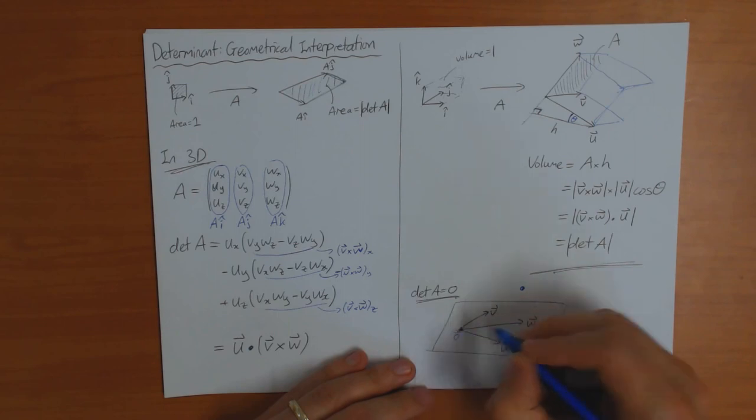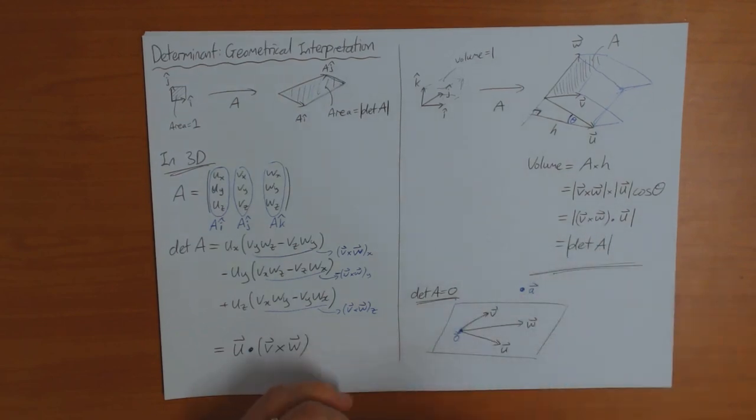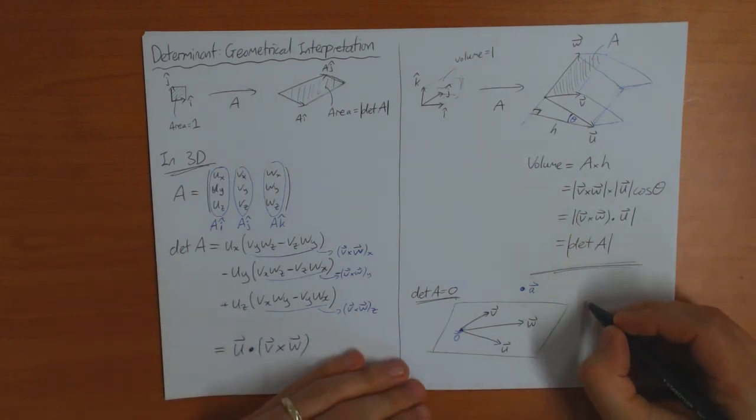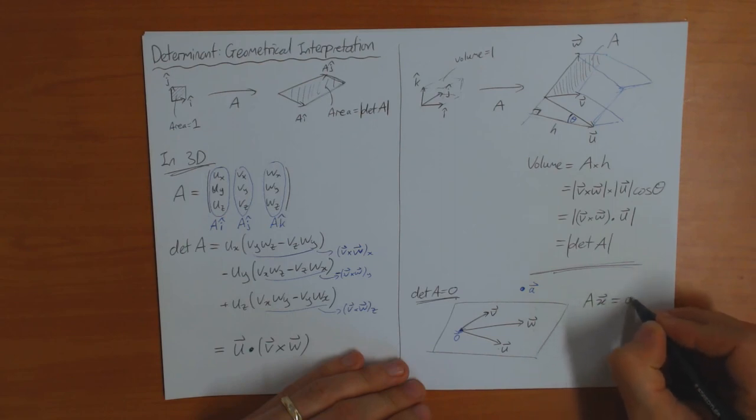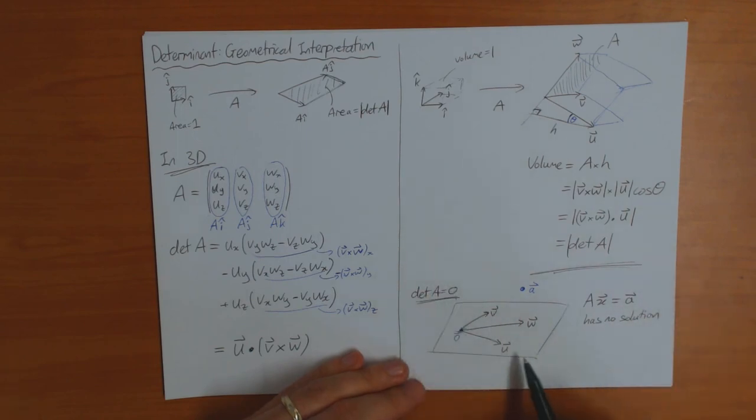This is zero here. I can take a point A not in this plane. And it must be impossible to satisfy the equation A times some vector X equals A. This has no solution. Because anything in A is a combination of U, V, and W. And these all lie in the plane, which does not contain A. So therefore, this has no solution.